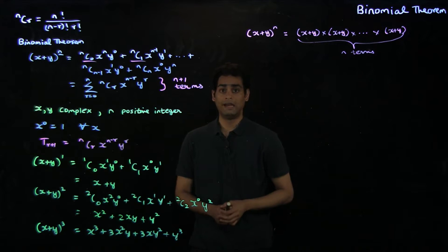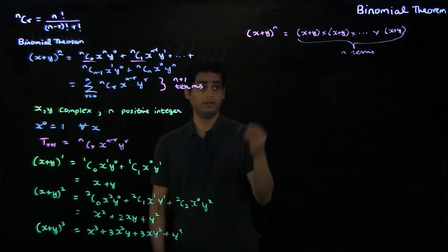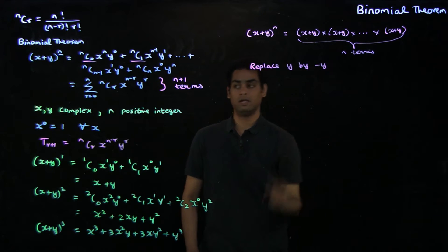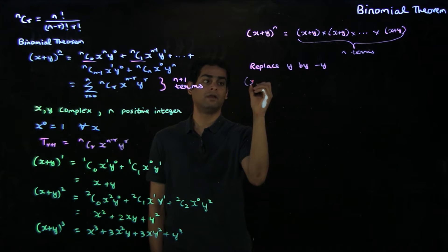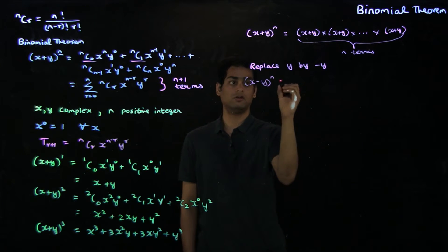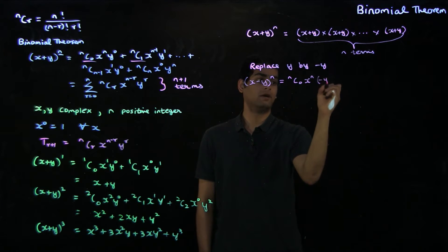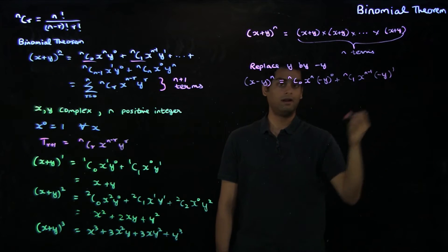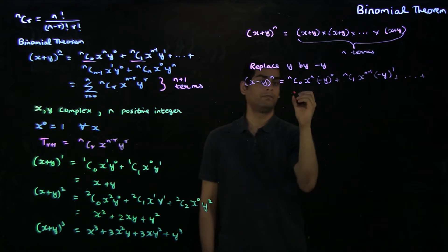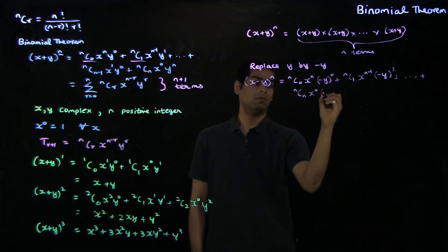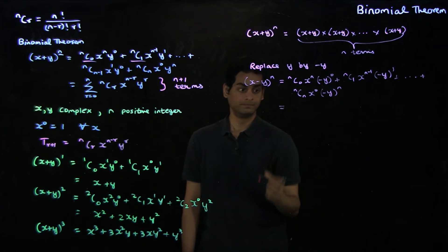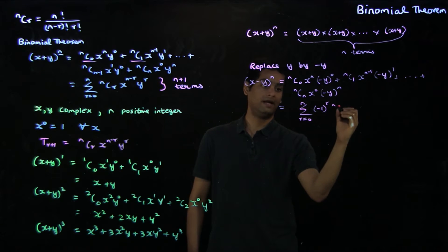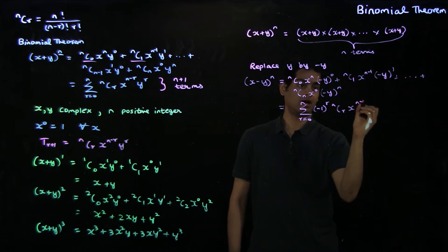For instance, you could replace y by minus y in the theorem. Upon doing so, you get an expression for x minus y raised to the n. This is nc0 times x to the n times y to the 0, minus nc1 times x to the n minus 1 times y to the 1, and so on. This can be written more simply as the summation r equals 0 to n of minus 1 to the r times nCr times x to the n minus r times y to the r.